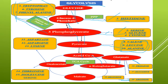Pyruvate is converted to acetyl-CoA and enters into the TCA cycle. The first intermediate of the TCA cycle is alpha-ketoglutarate. From alpha-ketoglutarate, glutamate is obtained, and glutamate is converted to proline, then glutamine, and also ornithine. From ornithine, arginine is also produced. So four different amino acids are biosynthesized: proline, glutamine, ornithine, and arginine.